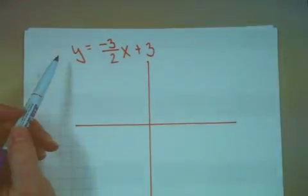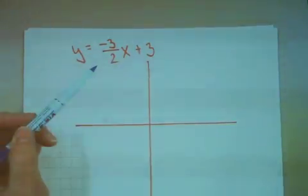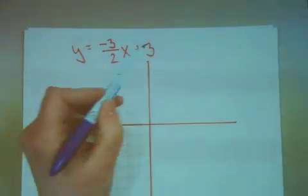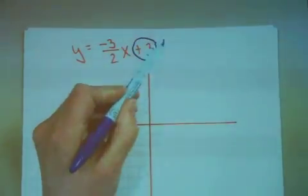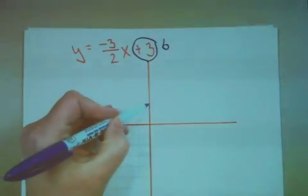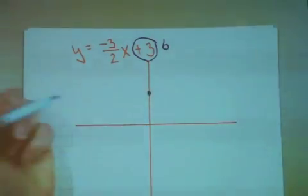Let's try this equation, y equals negative 3 halves x plus 3. What value should we start with? That's right, my b value, positive 3. Again on my y-axis I'm going to go up 1, 2, 3, a nice big fat dot.